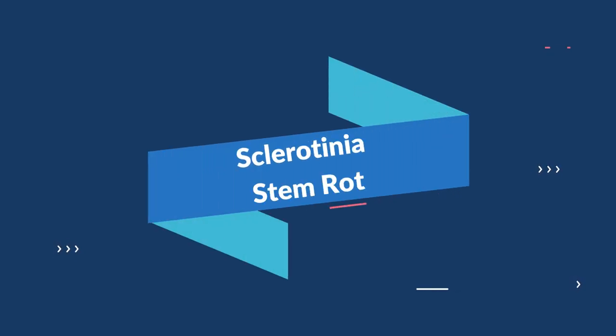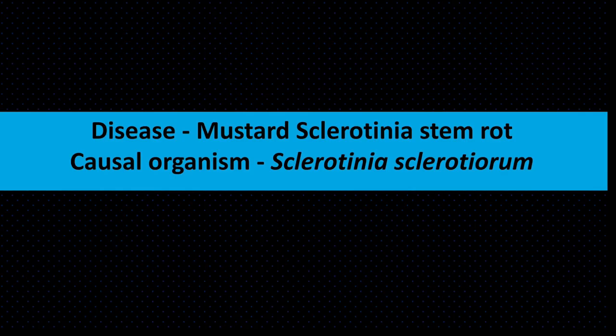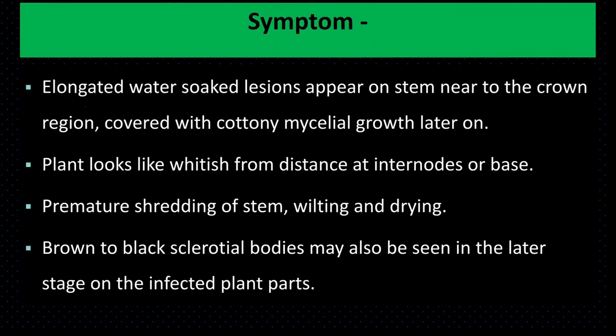अब हम देखते हैं Sclerotinia Rot के बारे में। Mustard में Sclerotinia Rot एक fungus से होता है जिसका नाम है Sclerotinia sclerotiorum। इस pathogen से Sunflower में भी Sclerotinia Stem Rot होती है। Symptom: Elongated water-soaked lesions appear on the stem near the crown region.